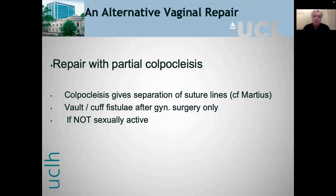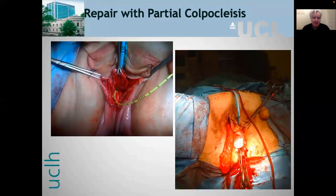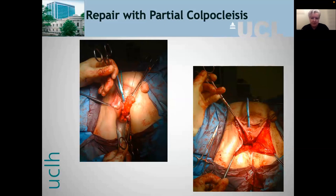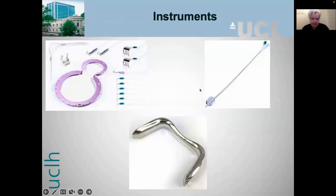An alternative, generally for an older woman who is not sexually active and does not wish to become so, is repair with colpocleisis. This is a pessary-related fistula — you can see the prolapse after pessary removal, the Foley catheter in the fistula, and we mobilize the vaginal flaps off the underlying bladder, close the bladder, and take a fat pad which we transpose. I find this helps avoid recurrence of prolapse. We excise most of the epithelium of the anterior and posterior walls, leaving narrow lateral channels to drain.